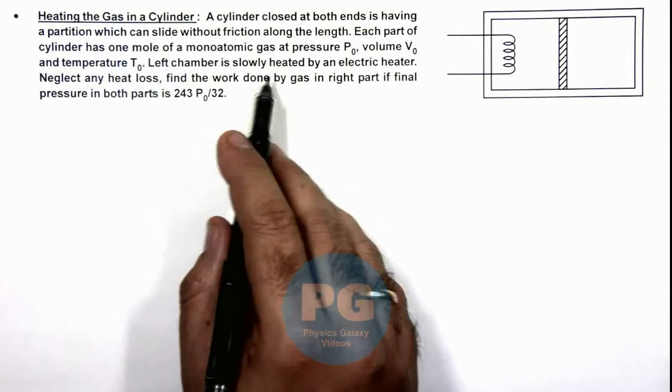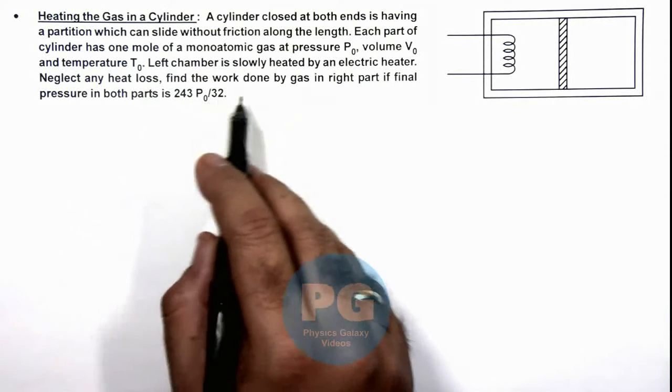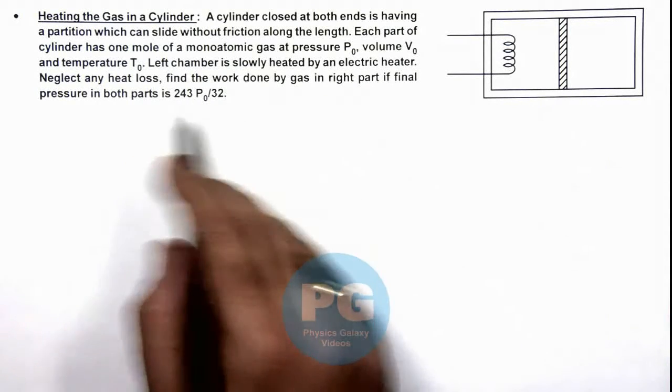The left chamber is slowly heated by an electric heater. Neglecting any heat loss, we are required to find the work done by gas in right part if final pressure is also given to us.